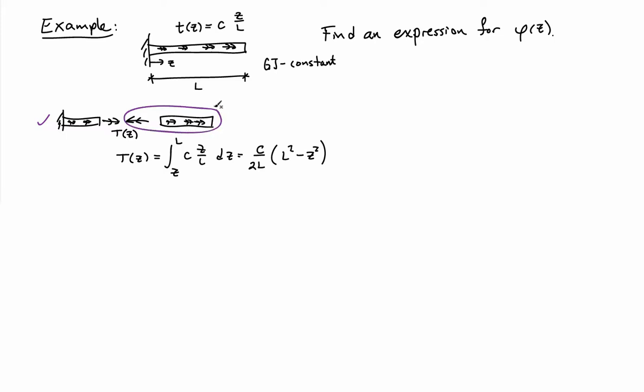If I sum the torques on that end piece, I find that the internal torque T(Z) is equal to the integral from Z to L of little t integrated with respect to Z. That's a simple integral, so I get C over 2L times L squared minus Z squared as a result. That gives me the internal torque.